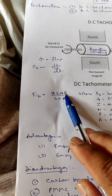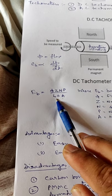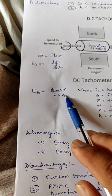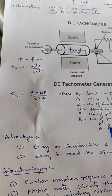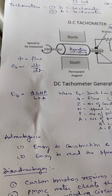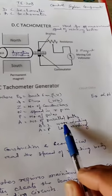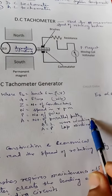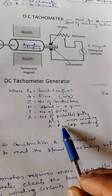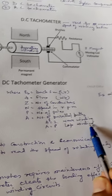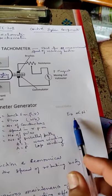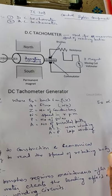P is the number of poles, and A is the number of parallel paths. The number of parallel paths are two when the winding is wave winding. The number of parallel paths are equal to the number of poles when there is lap winding.